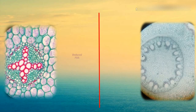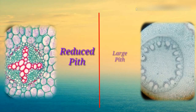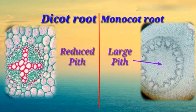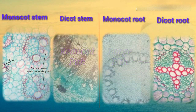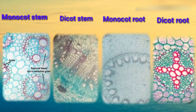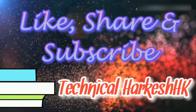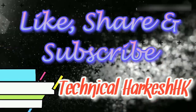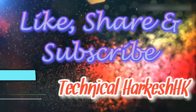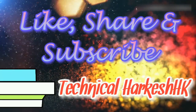In dicot root, the pith is absent or reduced, whereas in monocot root, a large pith is present in the center. So this is how we can easily differentiate these slides. Please like, share, and subscribe to our channel for such videos.